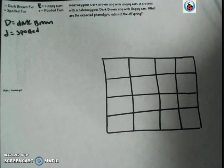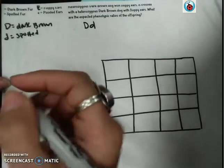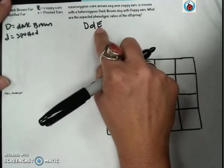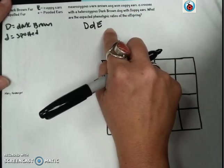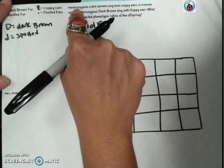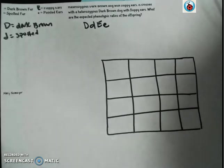Our question says a heterozygous dark brown dog with floppy ears. Now you may be wondering, it doesn't tell us about that dog if it's homozygous dominant or heterozygous, but because it has the heterozygous here in front of both of those traits, we assume that it's heterozygous for both.